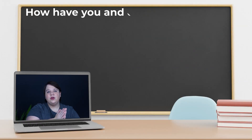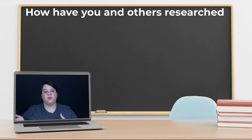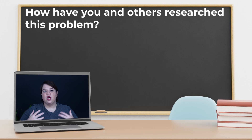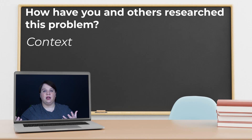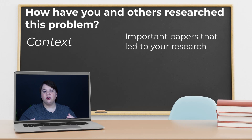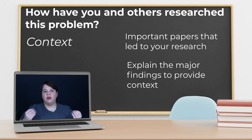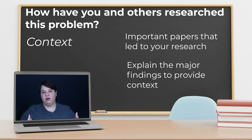The fourth question you need to answer within your introduction is: how have you and others researched this problem? Once you know the problem you're researching, you want to give people the context for what's been done before. This means finding those important papers that led specifically to your research and giving a bit of information about what those papers did and found, so readers can understand why you're conducting this study and better understand your results within the greater scheme of your field.